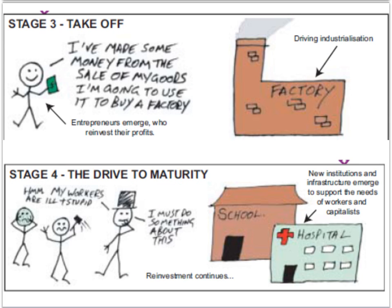For countries to progress to the third stage of development, Rostow argued that you needed the emergence of entrepreneurs willing to reinvest their profits into new forms of technology and infrastructure. The critical level of reinvestment is 10% of gross domestic product. When that occurs, you really begin to see the economies of poorer countries take off, marked by a growth of manufacturing and industrialisation.